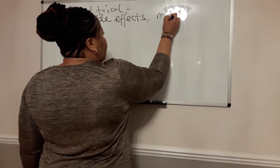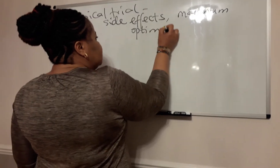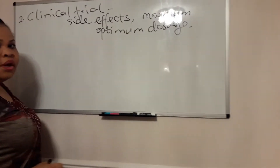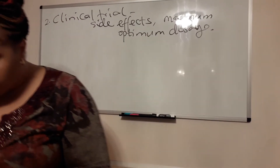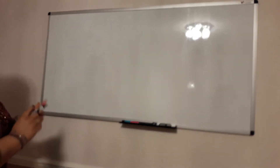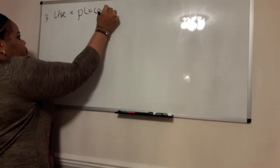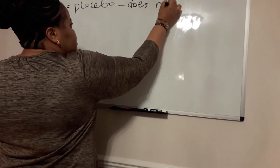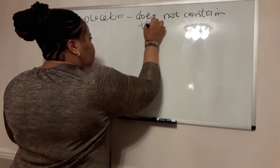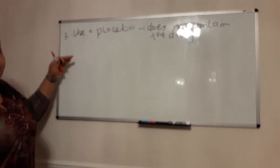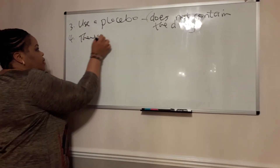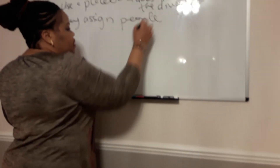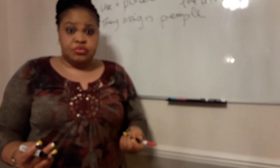Remember: healthy volunteers, side effects, and optimum dosage will be determined. When they determine the optimum dosage, they will then carry out another trial using placebos. A placebo is actually a preparation that does not contain the drug — it could just be a sugar pill or something like that. However, when they do that, it's important that they assign people randomly to groups — some to the placebo group and some to the actual drug group.